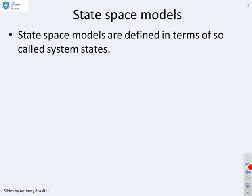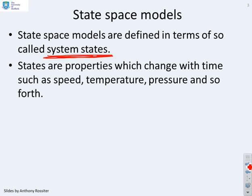State-space models are defined in terms of so-called system states. One of the first things we've got to do is understand what we mean by that. States are properties which change with time. That's key. Things like speed, which is the derivative of displacement, or the derivative of speed is acceleration. Temperature can change with time so it has a derivative. Pressure can change with time so it has a derivative. Some sort of property of a system which can change with time. These will be states.